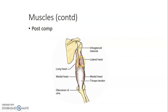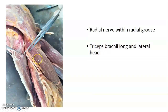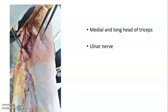The muscles of the posterior compartment are mainly the triceps brachii. The long head arises from the infraglenoid tubercle, the lateral head from the lateral and posterior surface of the proximal humerus above the radial groove, and the medial head from the distal two-thirds of the medial and posterior surface of the humerus below the radial groove. All three heads insert onto the olecranon process, are innervated by the radial nerve, and cause shoulder extension, adduction, and elbow extension.